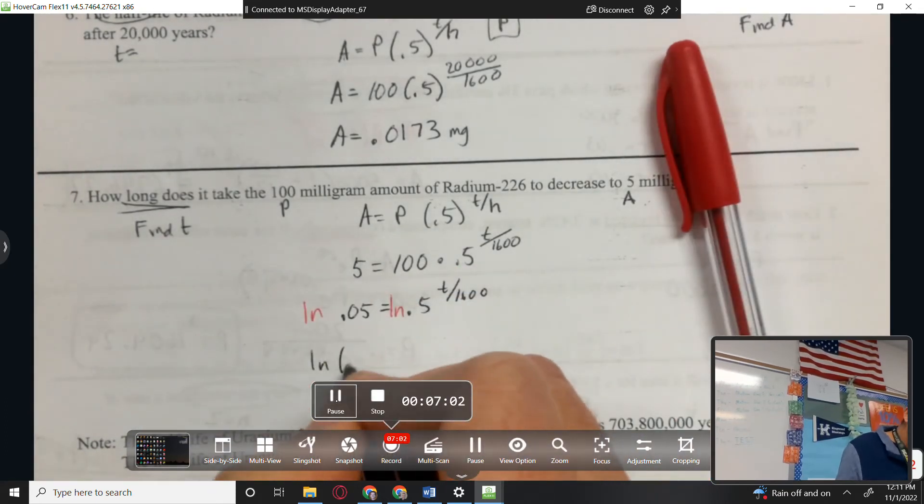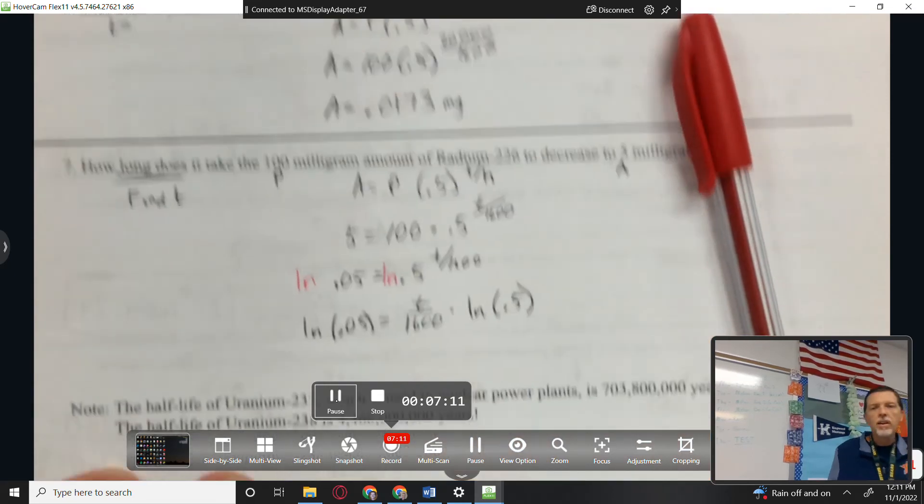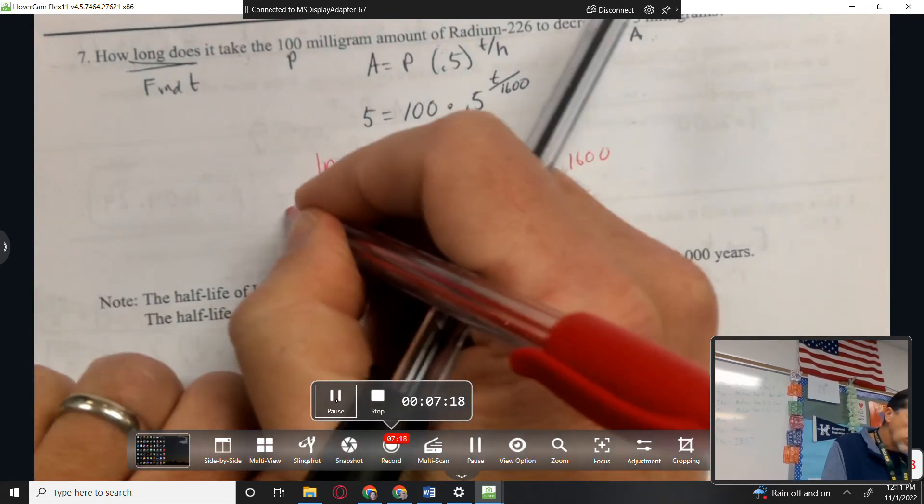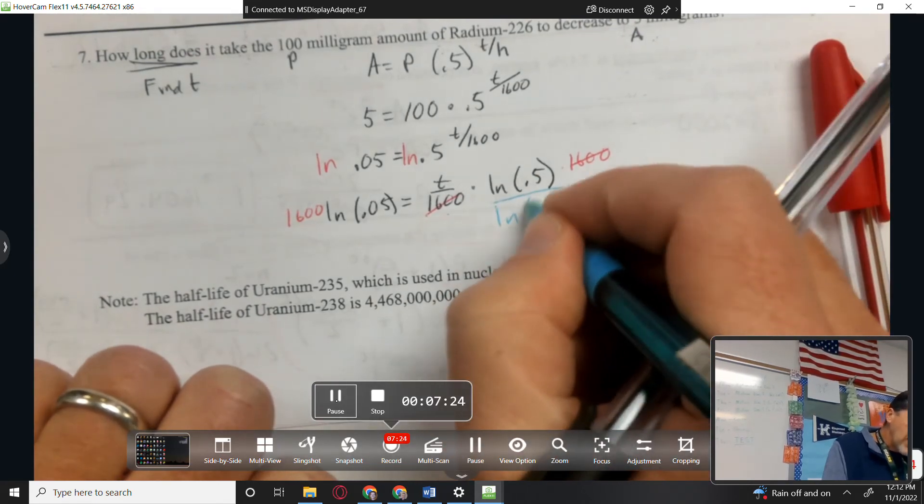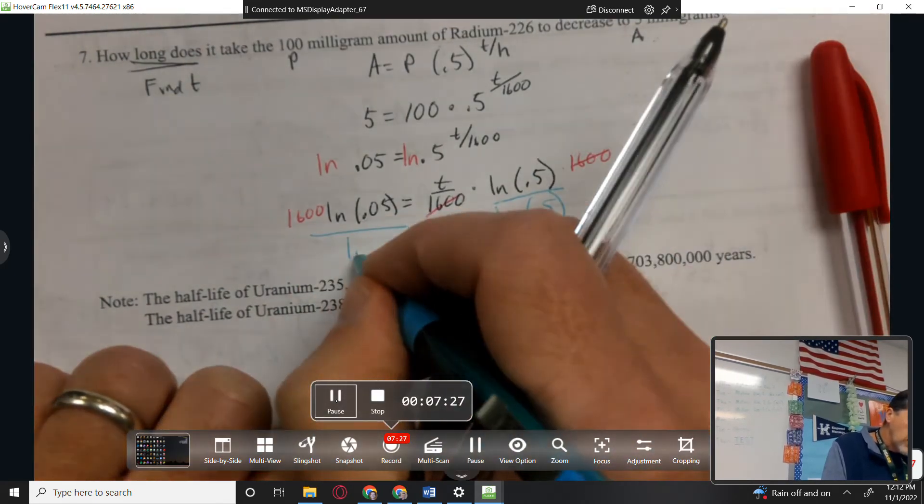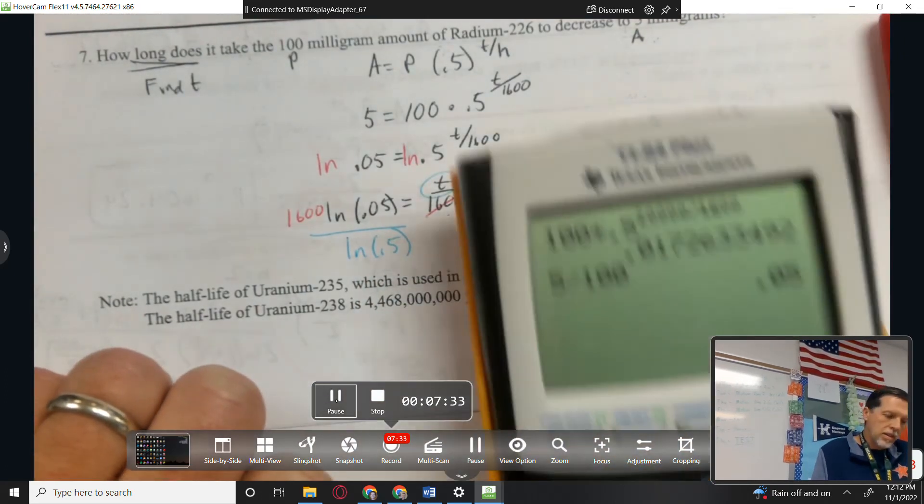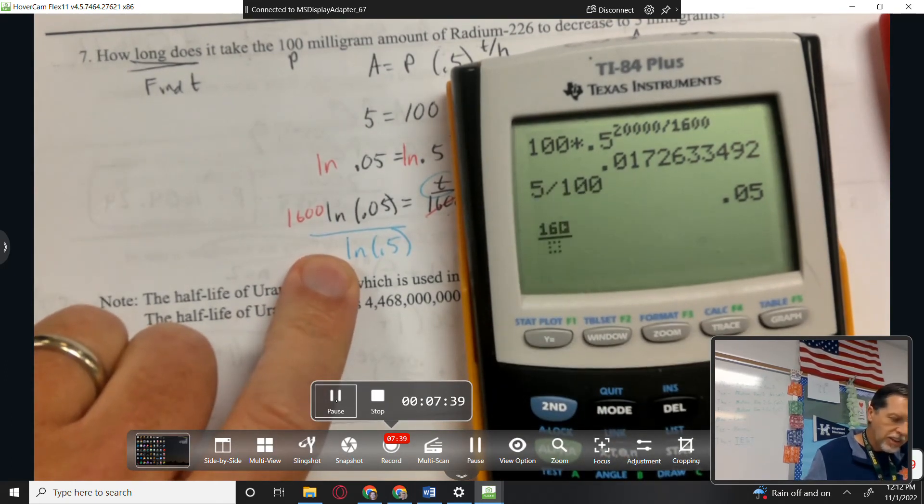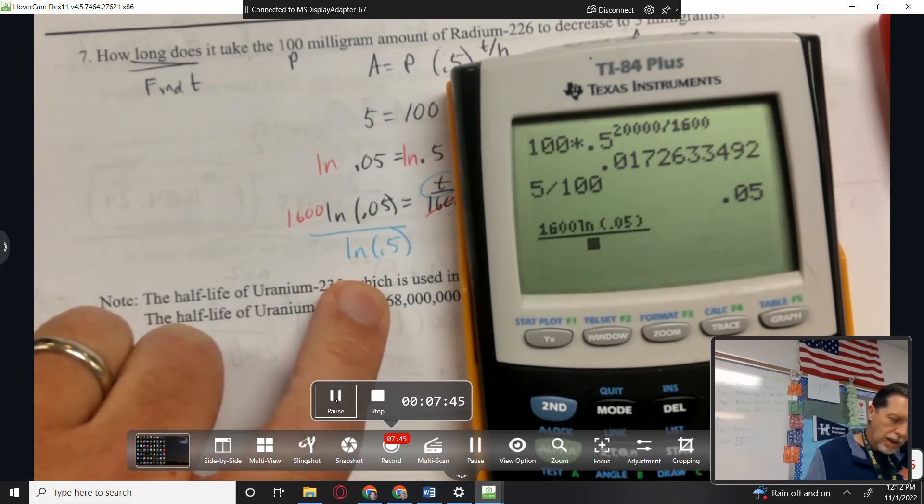And then natural log both sides to get the T out of the exponent, so natural log 0.05 equals T over 1600 times natural log of 0.5. I've got to be careful with my algebra here. I need to multiply by 1600 to get the 1600 out of the denominator, but then divide by natural log of 0.5. So that'll get T by itself. Careful on the other side. Fraction bar for extra caution here, 1600, natural log 0.05, divided by natural log 0.5.